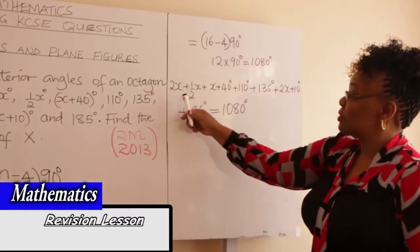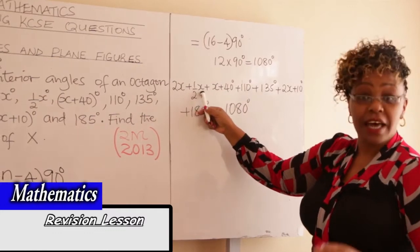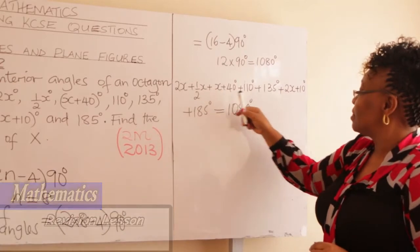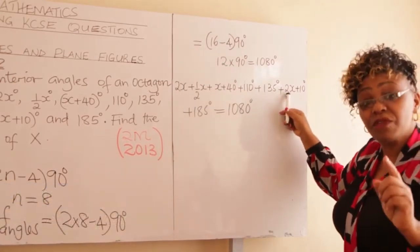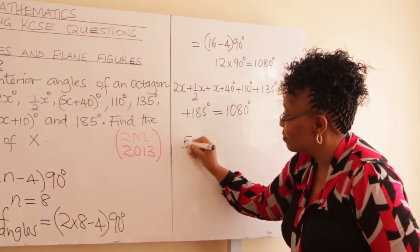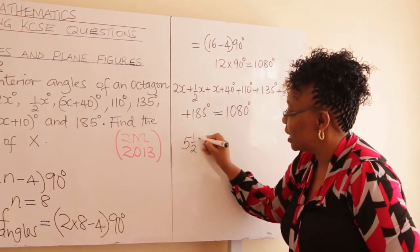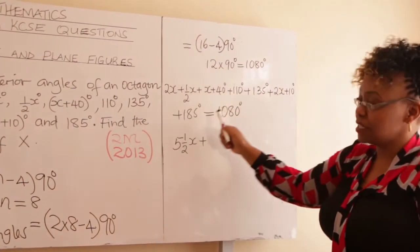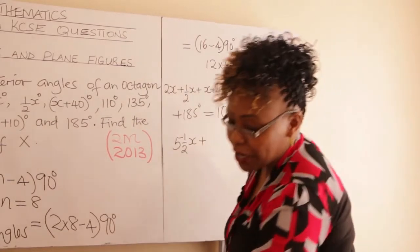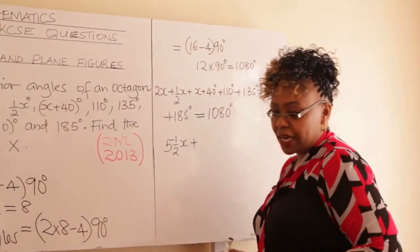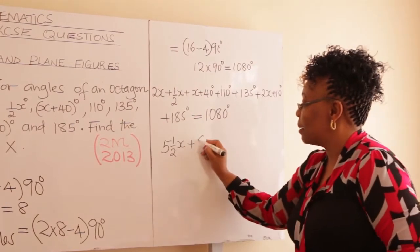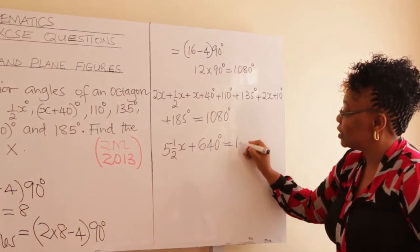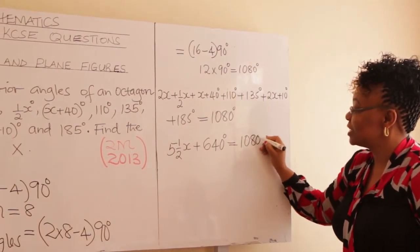Bring the like terms together: 2x + half x = 2 and a half x; plus x = 3 and a half x; plus 2x = 5 and a half x. Adding the constant angles together gives 640 degrees. So 5 and a half x plus 640° = 1080°.